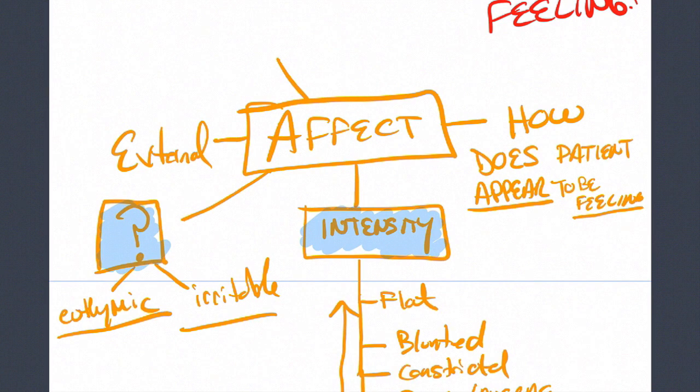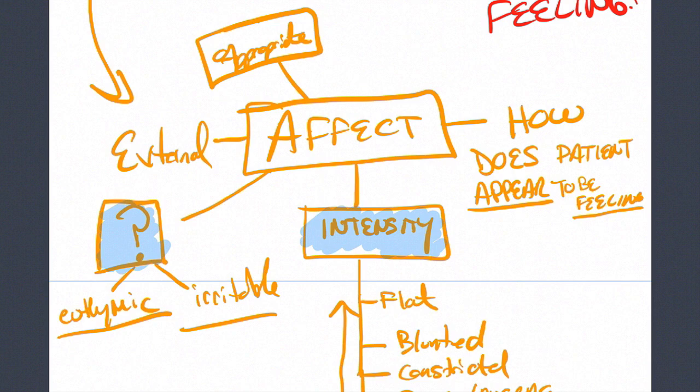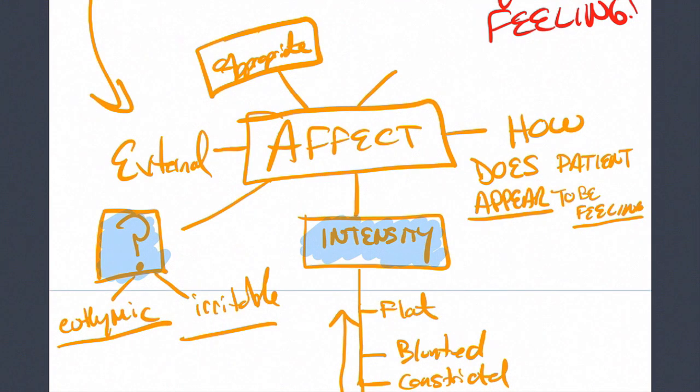Something to also be observing for is how appropriate their affect is. Is it appropriate for their thought content? If a patient is thinking something that's very upsetting, but is laughing while he has that kind of thought content, then that would be something to document. A lot of times we'll comment on whether the mood is congruent with the affect. For example, if the patient says they're feeling upset and they look like they're upset, then their mood would be congruent with their affect. Finally, you can also think about the mobility. Does their affect change, or the level of change of their affect during the interview? If it's very different throughout the interview and it changes all the time, then they would have a labile affect.